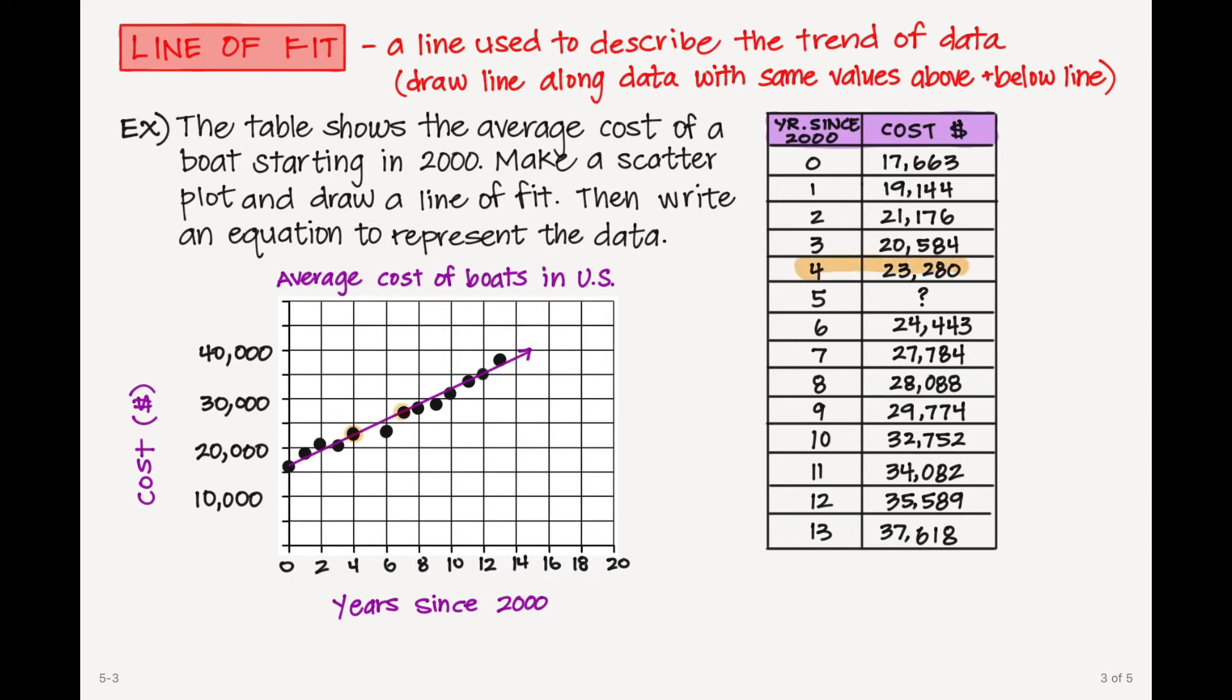Now you're going to take two points that you went through. So I'm going to pick (4, 23,280) and (7, 27,784). And I'm going to use those to find the slope of my line. And so like you've done in the past, you're going to subtract your y values on top and your x values on the bottom.